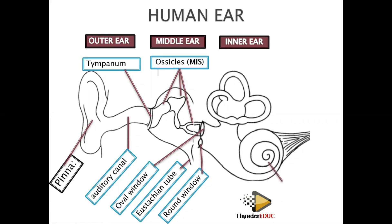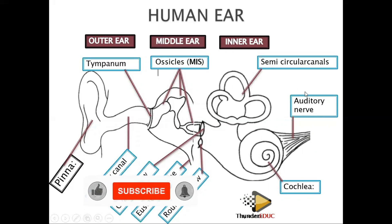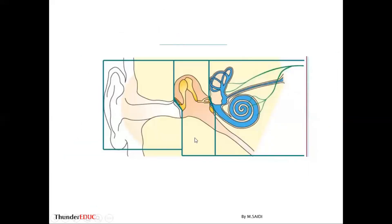The inner ear is divided into different parts: the cochlea and the auditory nerves. The cochlea is where you find the cells that detect sound or vibration. The auditory nerves send impulses to the brain. There are also the semi-circular canals, which are responsible for balance. These are the main parts of the ear, and we need to know the function of each to understand how the ear works.